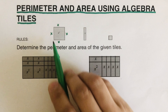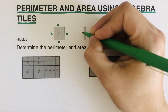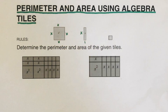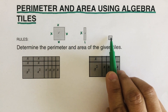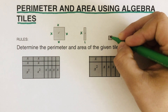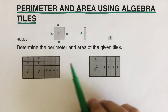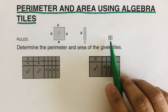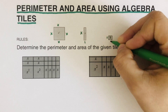The number written inside is the area, and the measures around the outside are the side lengths. For the x tile, the area is x because one side is x and the other side is 1, so x times 1 equals x. The small square tiles have a measure of 1 because both sides are 1.